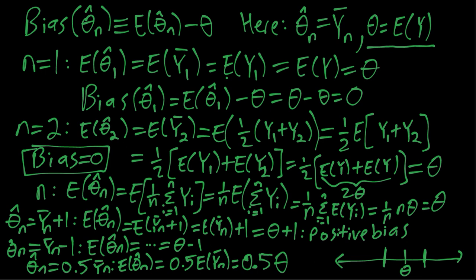So for example, if theta is positive 10, 0.5 theta would be 5, so it's somewhere between 10 and 0. If the true theta were negative 10, then 0.5 theta would be negative 5. So again it's between the true theta and 0, even though in the second case it's above the true theta. In the first case it's below the true theta. So in that case it's what we call attenuation bias.